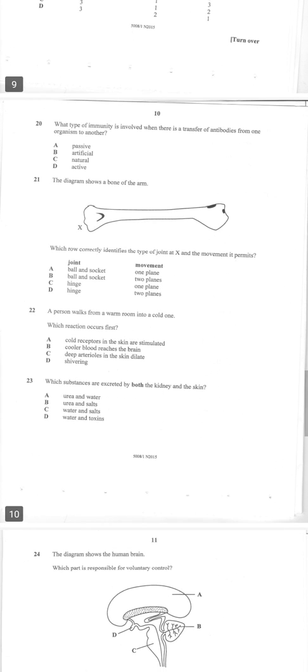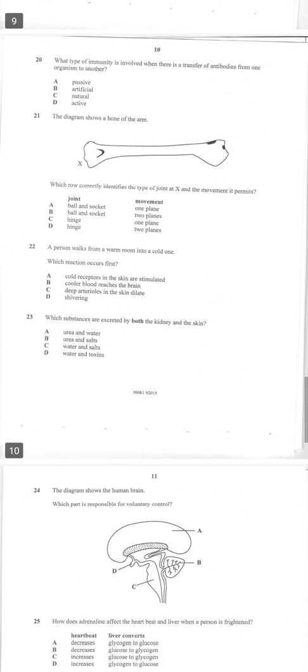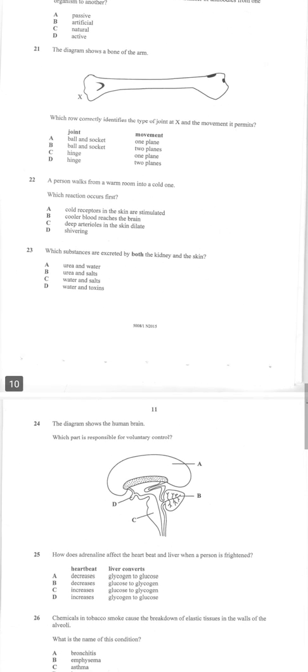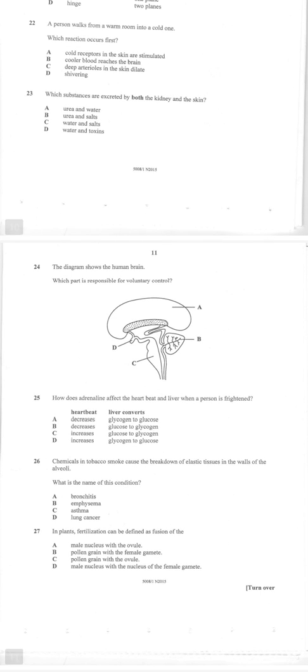Number 20: what type of immunity is involved when there is a transfer of antibodies from one organism to another? From one organism to another, that's passive immunity. And then I will continue from number 21 to number 40 on our next video.